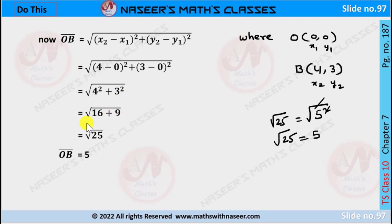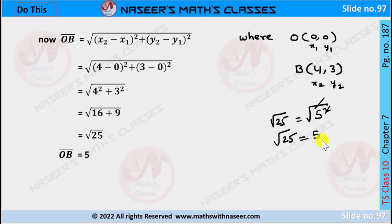We write it as the square root of 4 squared plus 3 squared. 4 squared is 16 and 3 squared is 9, giving us the square root of 16 plus 9, which is the square root of 25. The square root of 25 is the square root of 5 squared; the root and square cancel. Therefore OB is equal to 5 units.